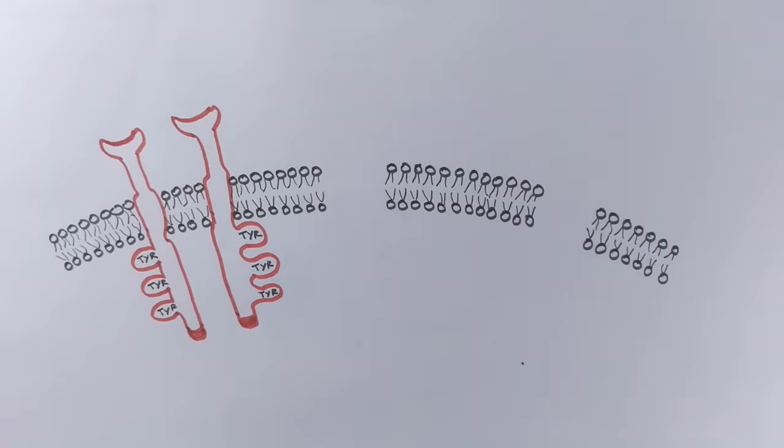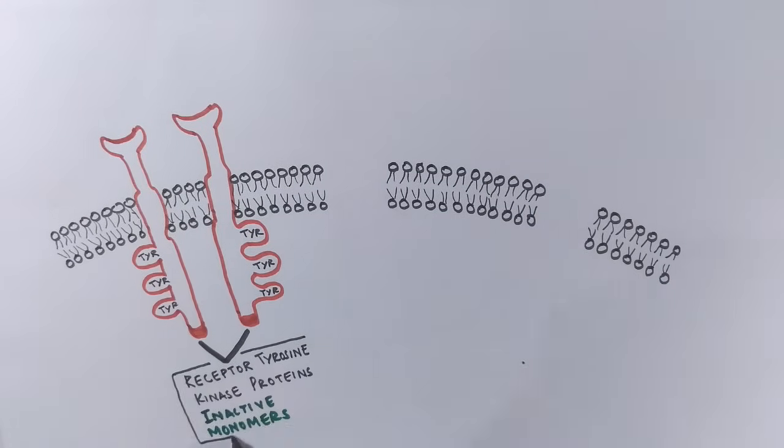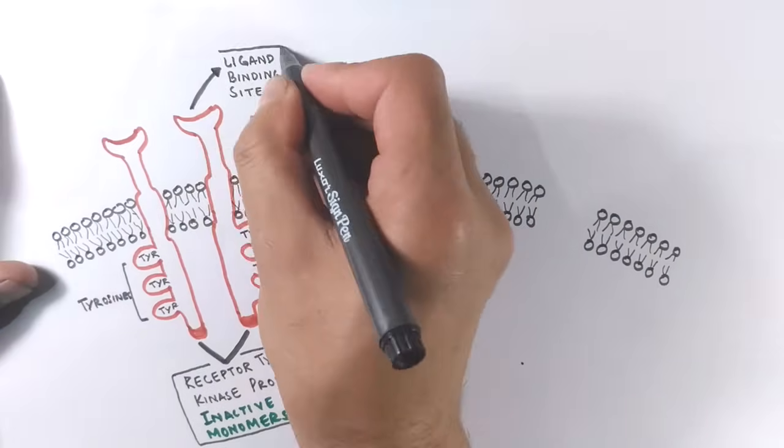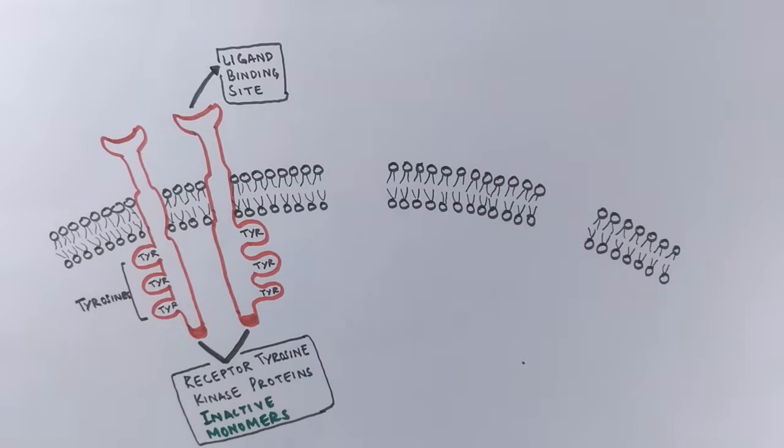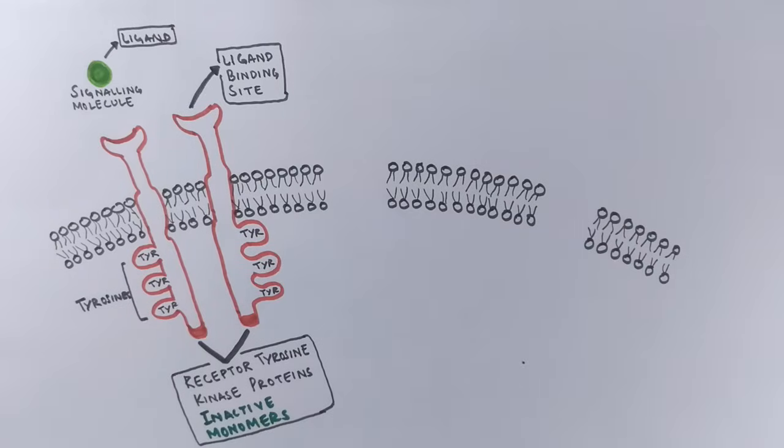Before the signaling molecule binds, their receptors exist as individual units reported as monomers, as you can see in this picture. They are both individual monomers separated from each other. On the extracellular part, it has a ligand binding site, and to these sites the signaling molecule binds and initiates the activation pathway.